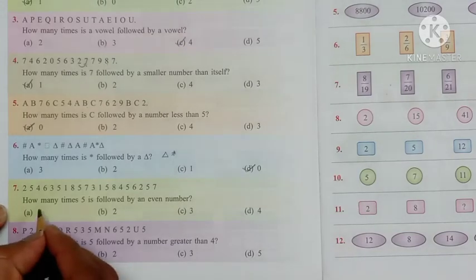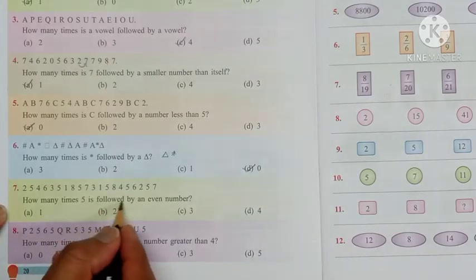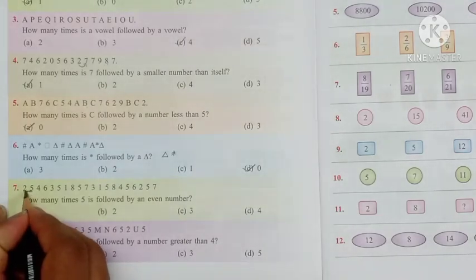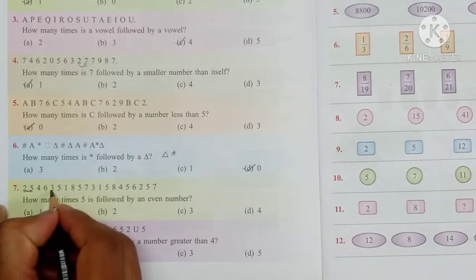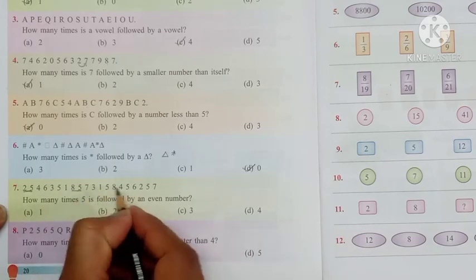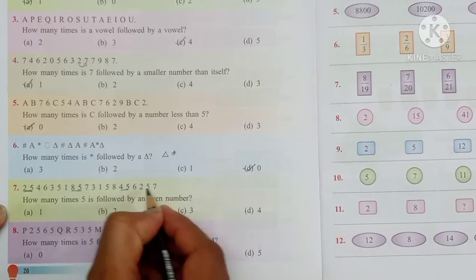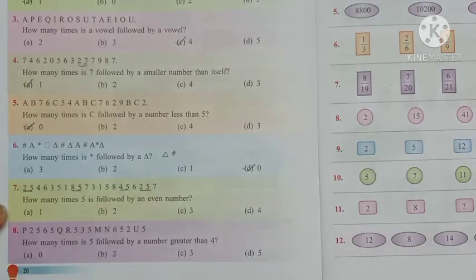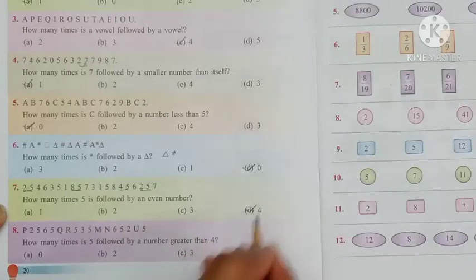Now the seventh question children. How many times is 5 followed by an even number. So 5, 1. This is an odd number, 2. Odd number 3, 4. So we can see 4 such combinations. So option D is the right one.